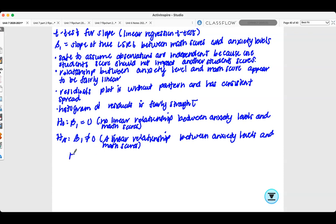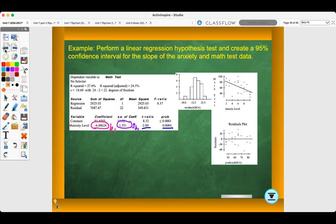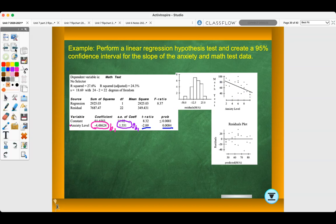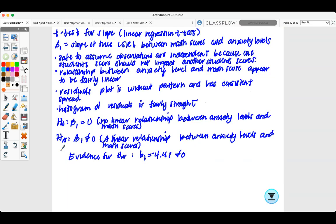Our evidence for our alternative hypothesis. B1 equals negative 4.48, which doesn't equal 0. And where we got that is right here. This is our B1. And when I'm talking about the residuals plot, the scatter plot, and the residuals histogram, I was looking at these pictures here. So, since they didn't give us a significance level, we're going to use alpha equals 0.05. My degrees of freedom would be 24 minus 2, because it's n minus 2, which equals 22.